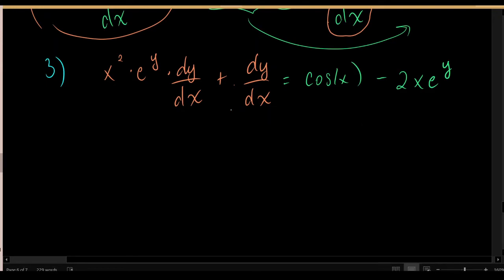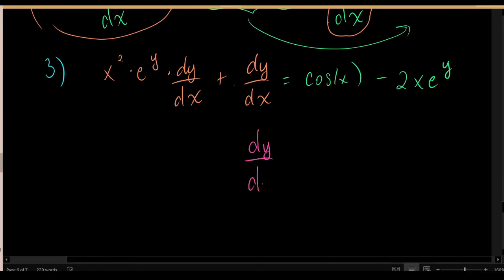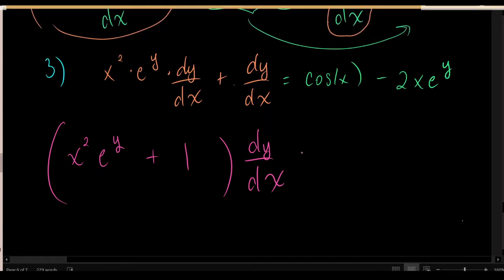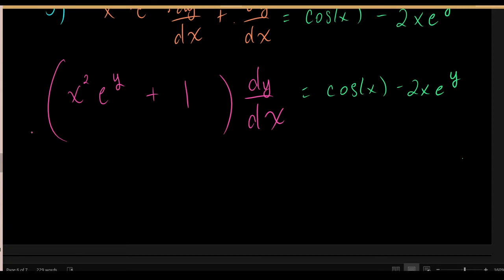Now both terms on the left side contain dy/dx, so we can factor it out. Pulling dy/dx from the first term leaves x squared e to the y, and pulling dy/dx from the second term leaves 1. To completely isolate dy/dx, divide both sides by the quantity in parentheses.